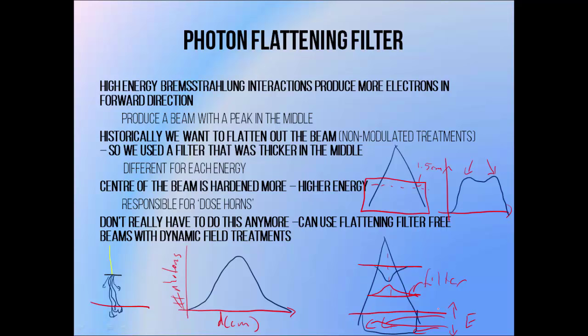Dose horns occur because the edges of the beam have a lower energy and deposit more dose at shallow depth, while the centre has higher energy and deposits less dose at shallow depth. If we look at 10 cm depth the beam is relatively flat — the lower energy parts closer to the edges have been attenuated more than the higher-energy centre as they pass through the patient. It's no coincidence this happens at around 10 cm depth, because the filters are designed to produce a flat beam profile at the depth we're likely to want to treat, and 10 cm is often chosen as representative of where we might expect to find a target. At even deeper depths such as 15 cm, the dose is actually lower at the field edges because these lower energy regions have been attenuated more than the centre.